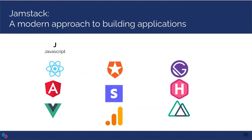The J in JAMstack is for JavaScript, responsible for all the dynamic behavior of the application. The A is for APIs, or application programming interfaces — services that can be called programmatically with JavaScript, allowing your application to integrate with third-party products and services. And the M stands for markup — the raw HTML, JavaScript code, and CSS that your browser needs to display the content of a website.